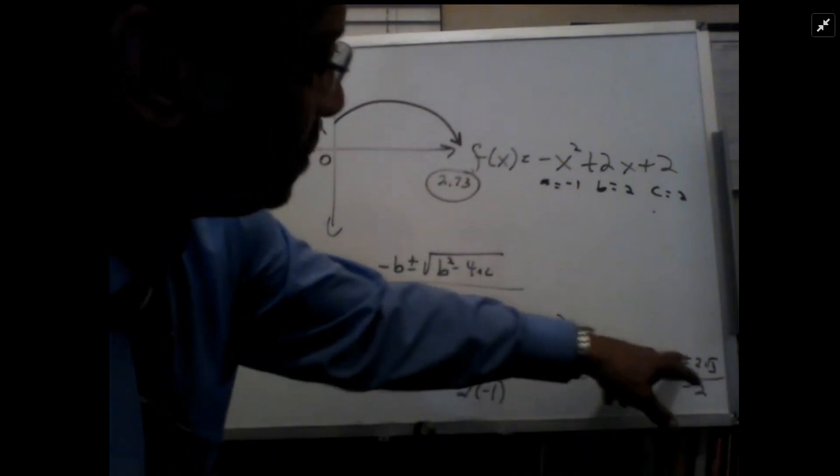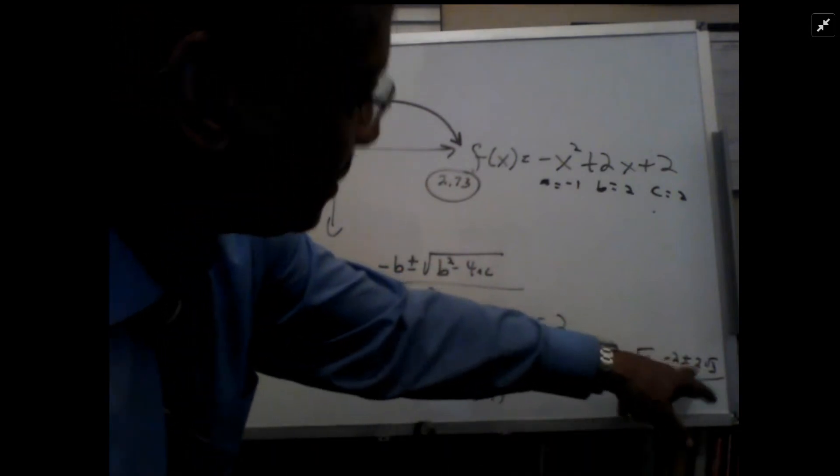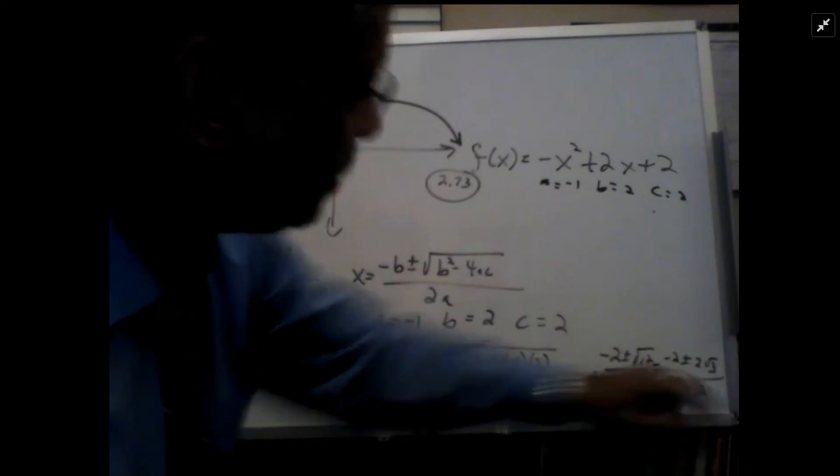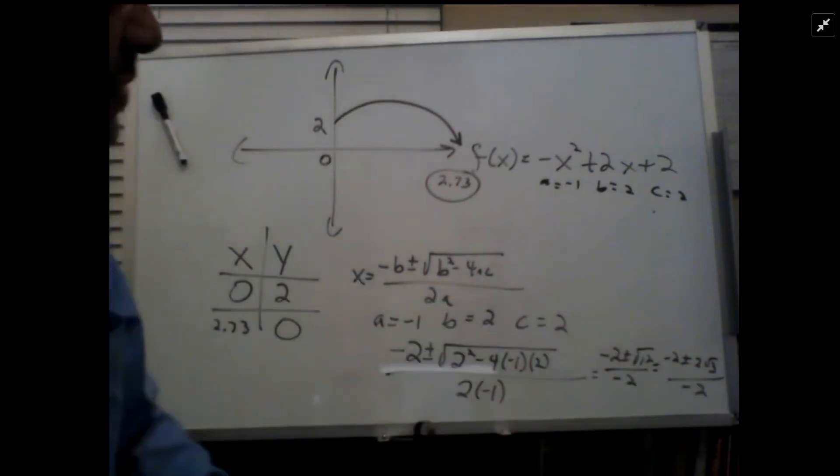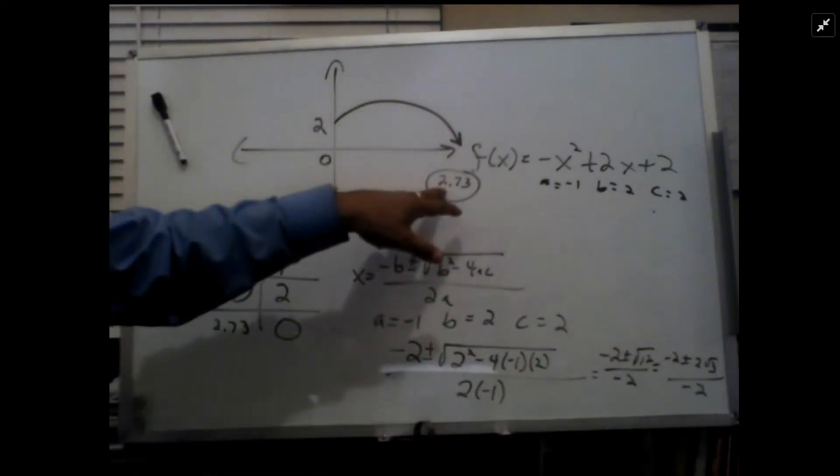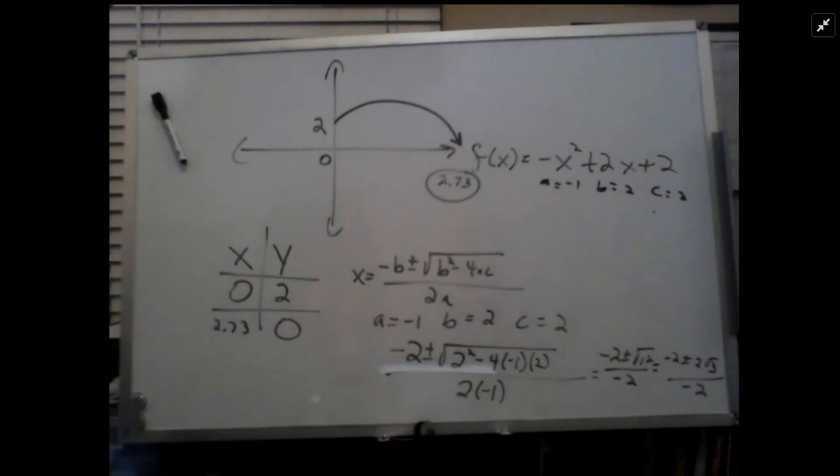So negative 2 plus minus 2 radical 3 over negative 2, and you push that into the calculator, you indeed get 2.73 meters for the horizontal distance.